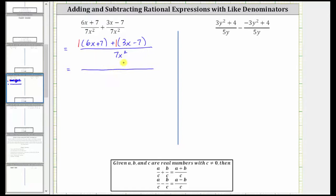Again, the denominator remains 7x squared, and the numerator is 6x plus 7 plus 3x minus 7. And now we combine like terms. 6x plus 3x is 9x, and 7 minus 7 is zero. The numerator simplifies to 9x, and the denominator remains 7x squared.